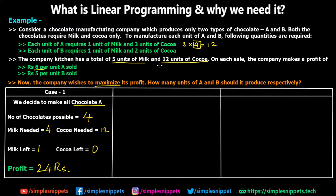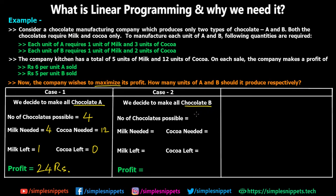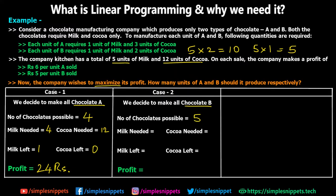Case two: the company decides to make all chocolate B instead. Each unit of B requires one unit of milk and two units of cocoa. With five units of milk and twelve units of cocoa, we can make five units of chocolate B — five units of milk are used and ten units of cocoa are used, leaving zero milk and two units of cocoa unused. We cannot create any more chocolate because we have no milk left.